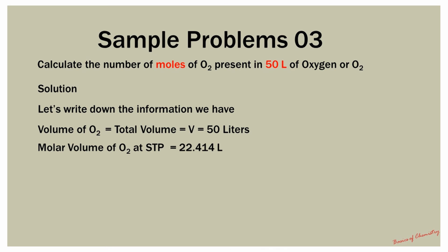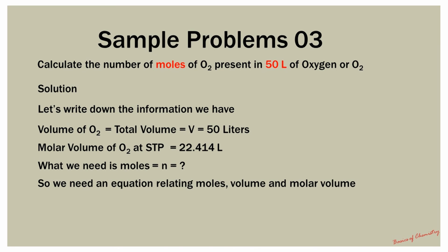Grammolar volume, that is the volume occupied by 1 mole of any gas at STP, is equal to 22.414 liters per mole. What we need is the number of moles of diatomic oxygen present in 50 liters of diatomic oxygen gas. The equation relating total volume, molar volume, and moles is: lowercase n is equal to total volume divided by grammolar volume, or GMV.